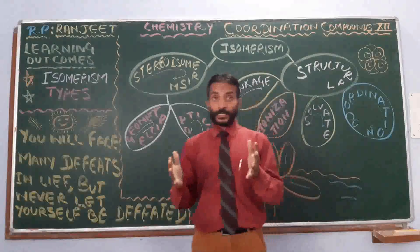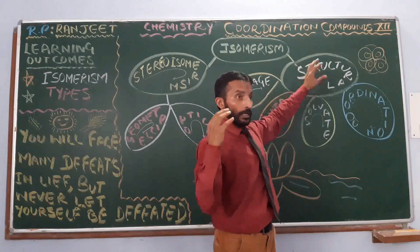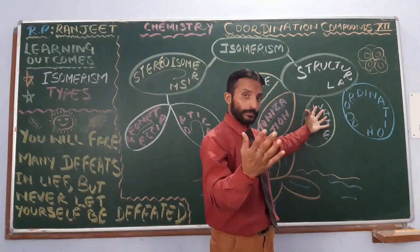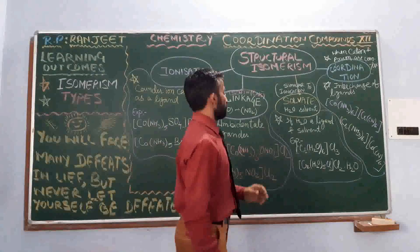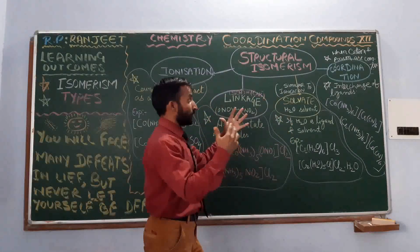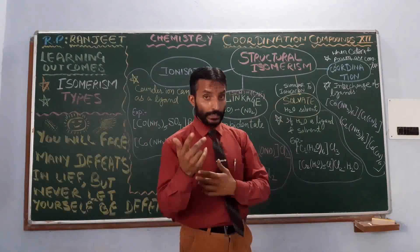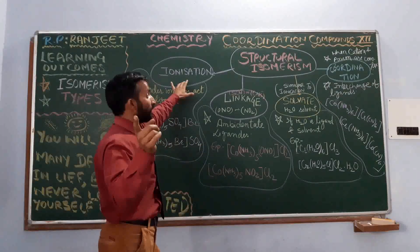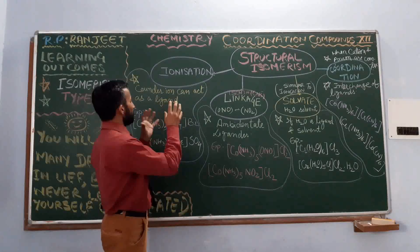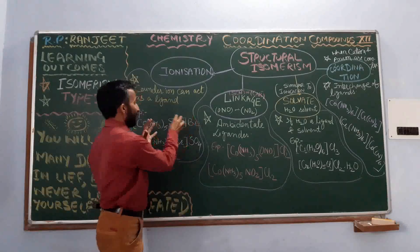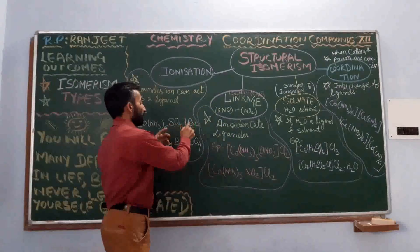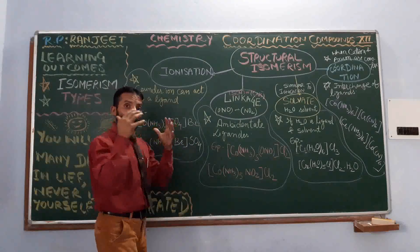Let us discuss one by one with examples. First, structural isomerism. As I have told you, in structural isomerism there is a difference in the structures of the two isomers. First of all is ionization isomerism. As the name indicates, there is something having a relation between the ions — the counter ion and the ligand. This isomerism is only possible in a coordination compound when the counter ion can act as an active ligand.